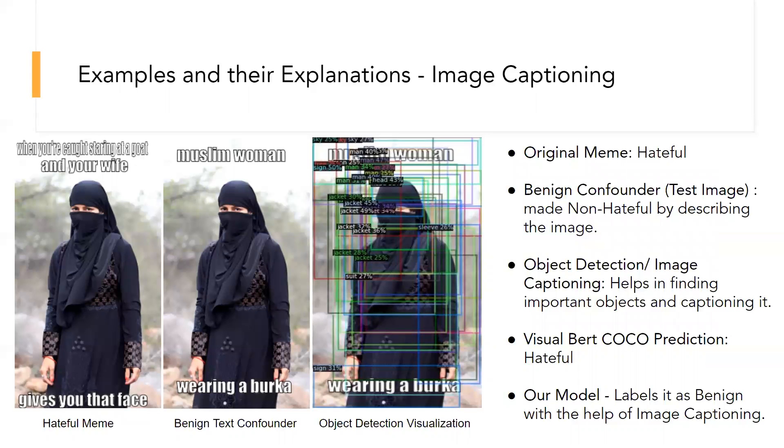As you can see in the slide, we have the original meme, which is hateful. We have benign text confounder, which is the second image, and it is made by just describing the image which turns the meme into non-hateful. And finally, object detection of the image. For testing, we use second image, whose label is zero, that is non-hateful.